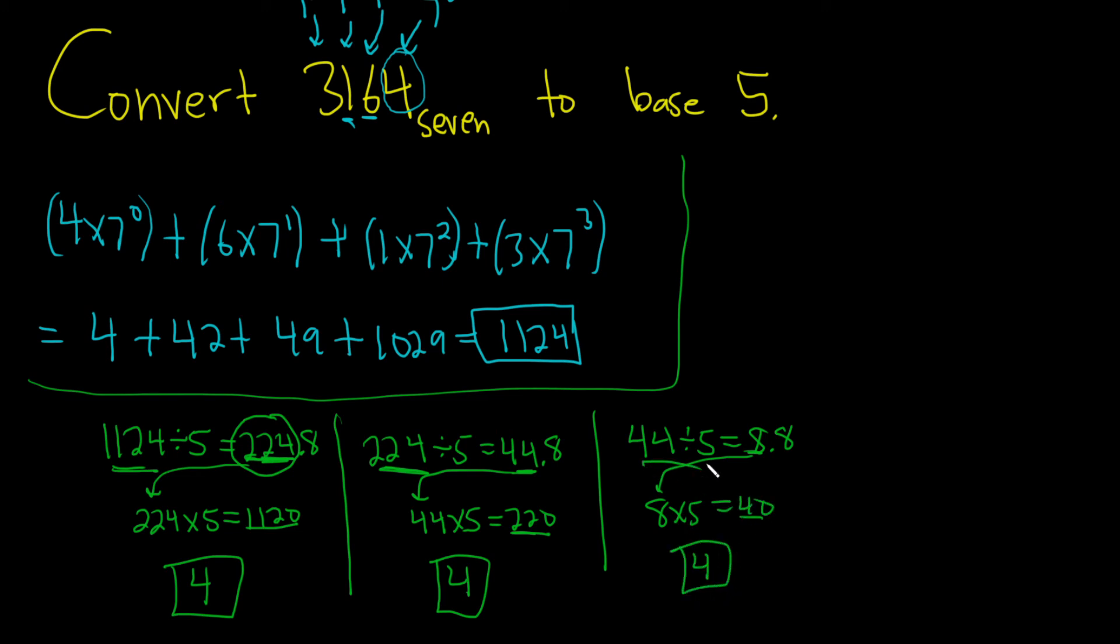So sometimes you can do it in your head. 5 goes into 44, 8 times, the remainder is 4. Then you do it again. 8 divided by 5 is 1.6. So you take the 1, multiply it by 5, so you get 5. 8 minus 5 is 3, that's the remainder. Then you do it one more time.